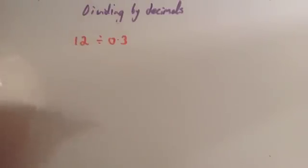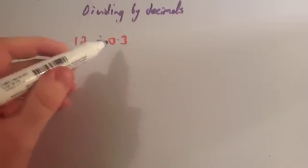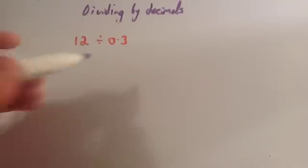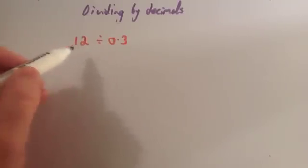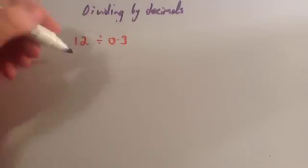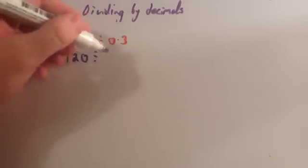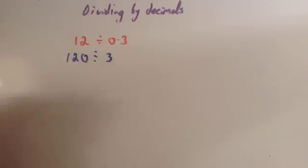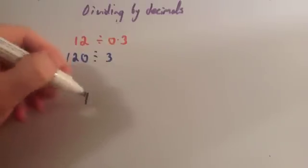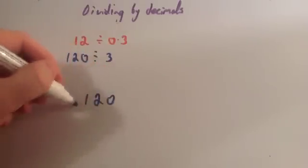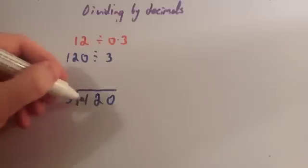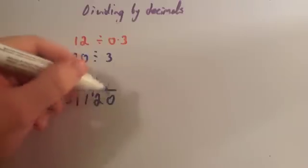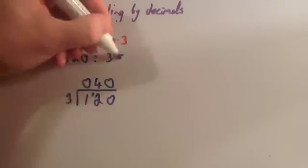Using short division, it's much easier to divide by whole numbers. So what we're going to do is use what we just looked at and times both of these numbers by 10, so that this number becomes a whole number. If we times both of these numbers by 10, we would get 120 divided by 3. We can do 120 divided by 3 really easily using short division — watch that video now if you need a recap. 3 doesn't go into 1, remainder 1. 3 into 12 goes 4 times, and 3 into 0 goes 0. So the answer is 40.